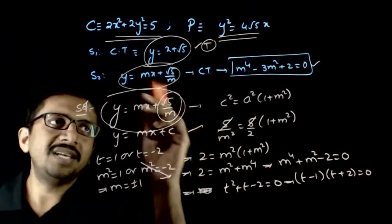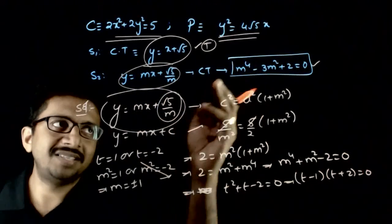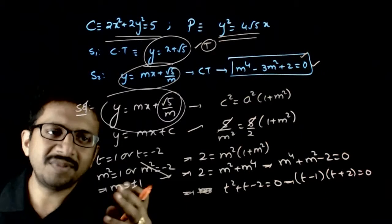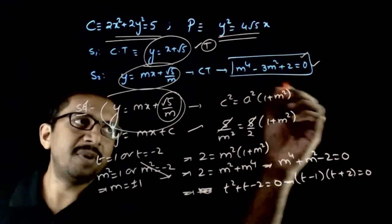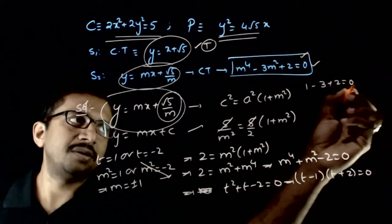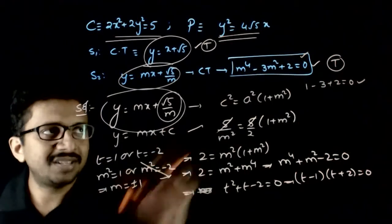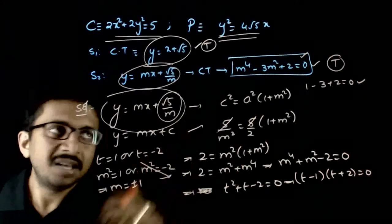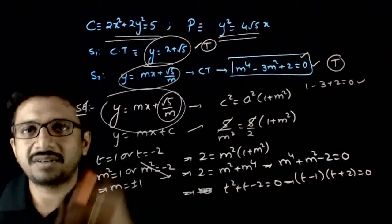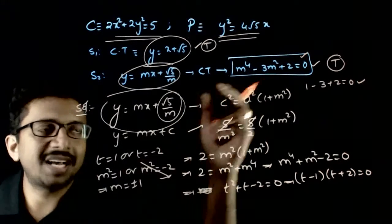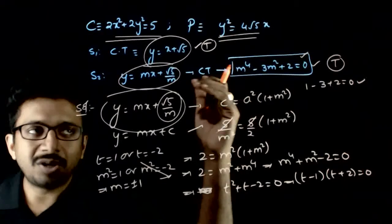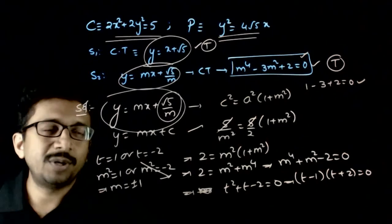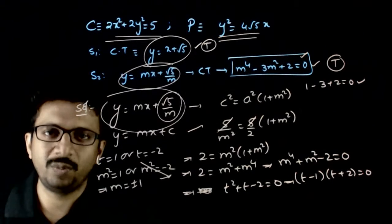For the second statement, we check whether the equation m⁴ − 3 + 2 = 0 holds when m = ±1: 1 − 3 + 2 = 0. Yes, statement 2 is also true. However, statement 2 is not a correct explanation for statement 1, because statement 2 simply restates the condition rather than explaining why statement 1 holds. Both statements are true, but statement 2 is not the correct explanation for statement 1. That is the answer to this question.